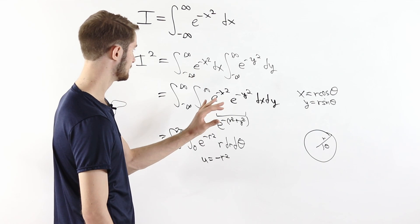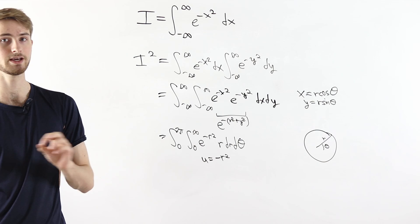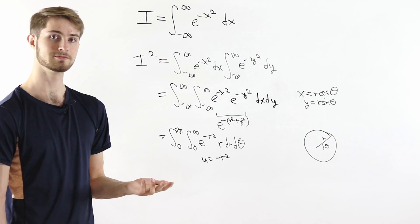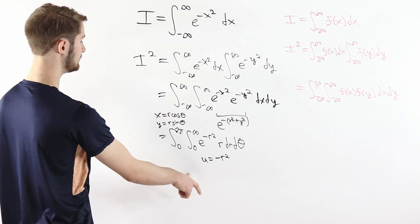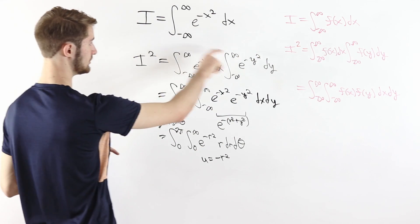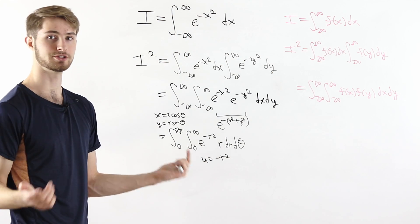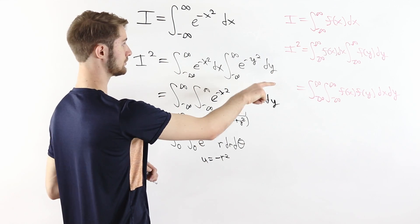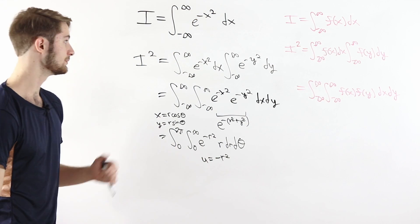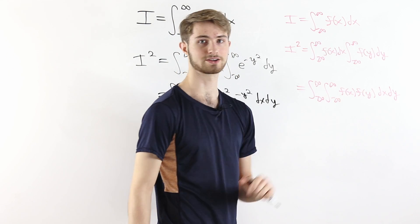But we can only do this process when the function inside the integral is e to the minus x squared. Can we do it if we replace e to the minus x squared with some other function f of x? If we want to apply this same trick to an arbitrary function, we start with the integral from minus infinity to infinity of f of x dx, multiply that integral by itself to get the integral of f of x times the integral of f of y, and combine these to get the double integral over all of 2D space of f of x times f of y dx dy.